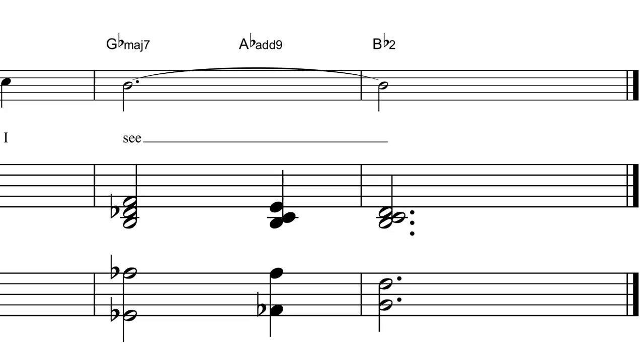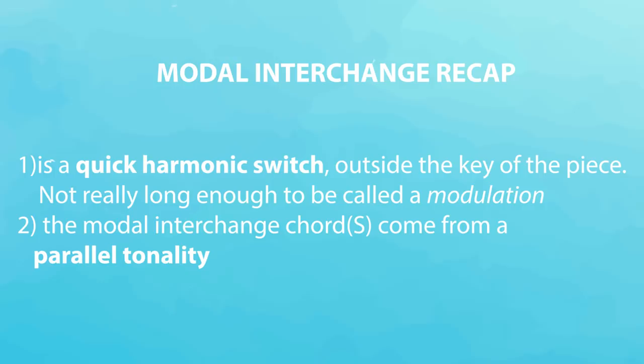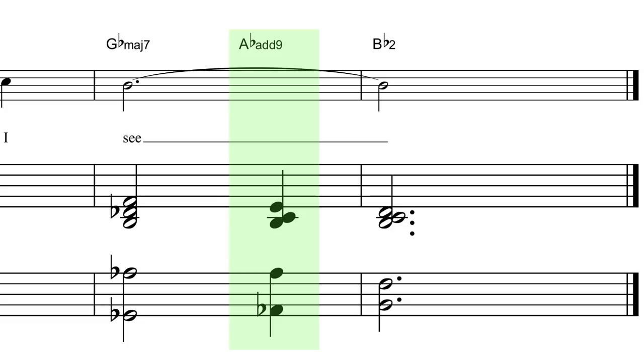Okay, the next instance of modal interchange is in the penultimate bar. G flat major 7 to A flat add 9. Let's listen to this from bar 13.